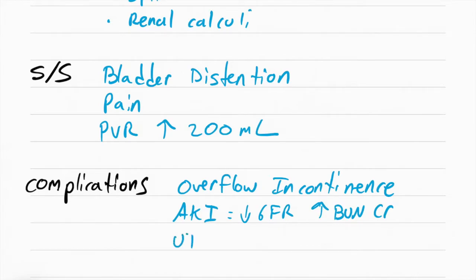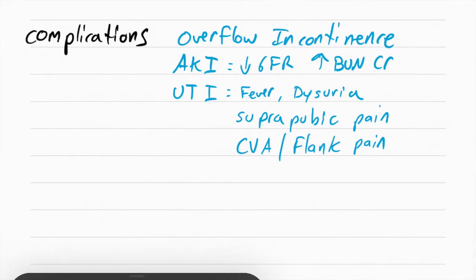Another complication can be UTI. This is because the urine just sits in the bladder and bacteria can start growing. The patient will have fever, it burns when they pee, that's called dysuria, suprapubic pain, and this means they probably have a lower UTI called cystitis, or CVA or flank pain. CVA stands for costovertebral angle pain or flank pain, and this is where the kidneys are on your back and it's usually because of an upper UTI.